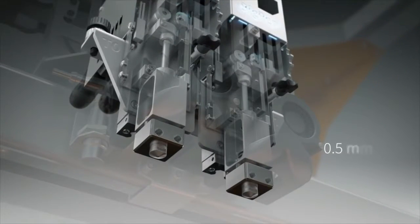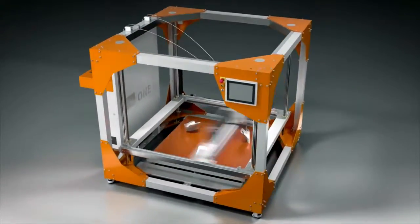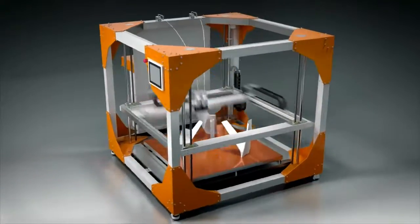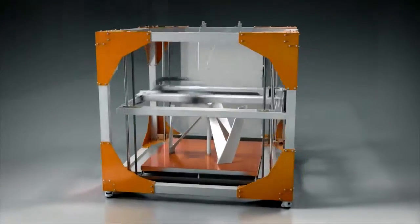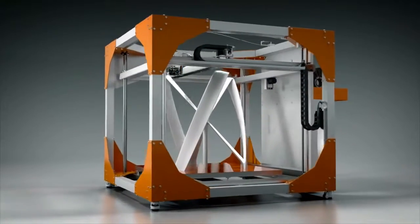The printheads can be equipped with either .5, 1, or 2 millimeter nozzles. The 2 millimeter nozzle slashes build time. Whether you're producing a series of objects or designing a single product, large-scale prints now build faster.